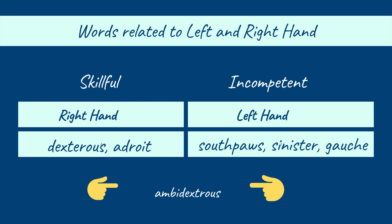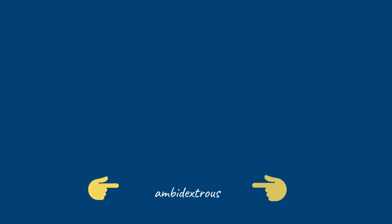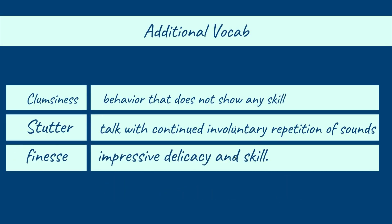Looking at the examples, we can say that personalities related to the right hand — dexterous and adroit — are skillful, and personalities related to the left hand — southpaw, sinister, and gauche — are incompetent. Also note that ambidextrous refers to a person able to use both hands. Please note the additional vocab: clumsiness, stutter, and finesse. These words are used in sentences for explaining other words.